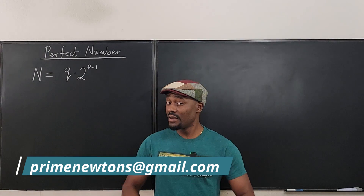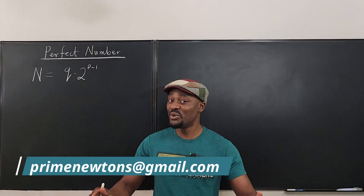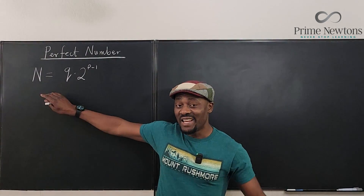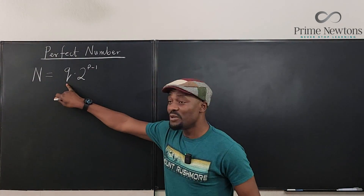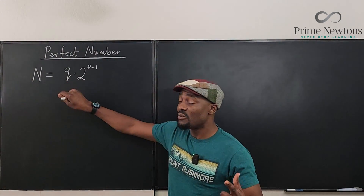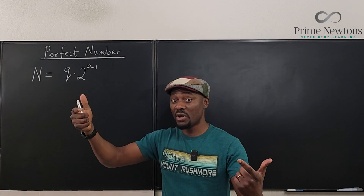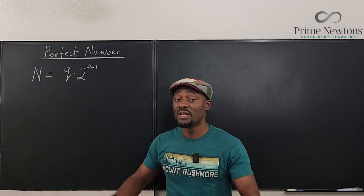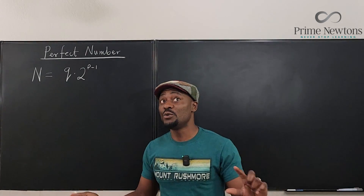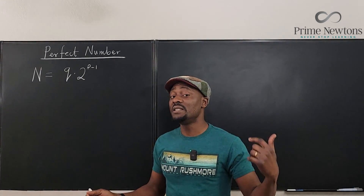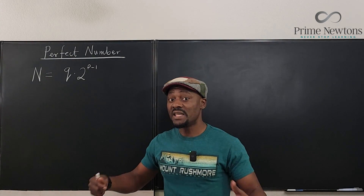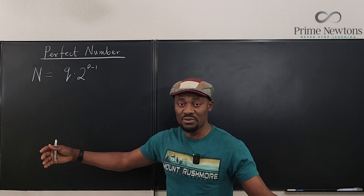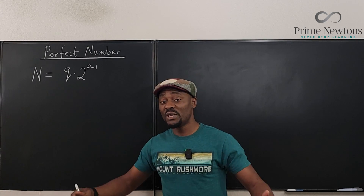Welcome to another video. I promised I was going to show you the proof of the formula for perfect numbers. Remember that q is obtained by raising 2 to the power of a prime number p and then subtracting one from the result. For example, if the prime number is 3, 2 raised to the power 3 is 8; if you subtract 1 from 8 you get 7, so 7 would be our q.